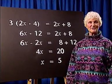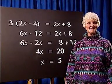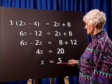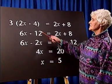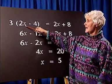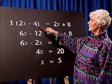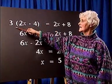Now, it's always a good idea to check that your answer is correct, so we substitute x equals 5 into the left-hand side. 2 times 5 is 10. 10 take away 4 is 6, times 3 is 18.